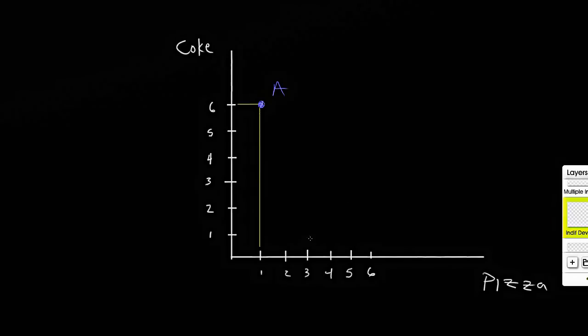So if I wanted to increase my pizza intake, I'd probably be willing to give up a decent amount of coke in order to get that second piece of pizza. So in order to get that second piece of pizza, maybe I'm willing to give up two additional cokes to get that second piece of pizza.